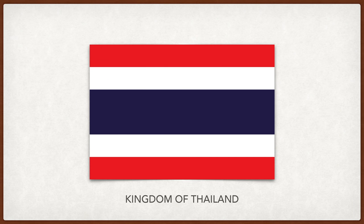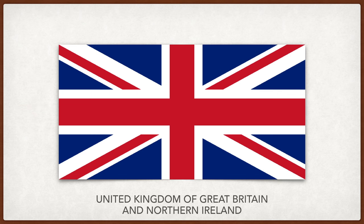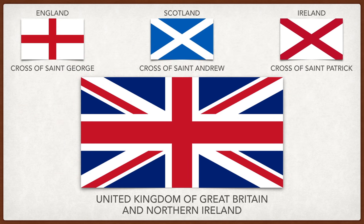Thailand. Red stands for the land and people, white for religion, and blue for monarchy. Some sources say that blue was added during World War I to show solidarity with the allies — the US, France, and Britain. United Kingdom. The flag is an amalgamation of three flags: the Kingdom of England, the Kingdom of Scotland, and the Kingdom of Ireland.